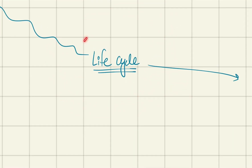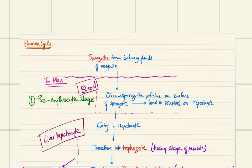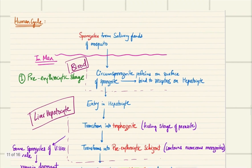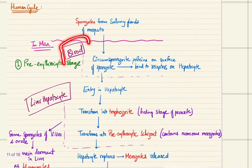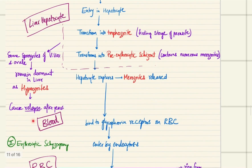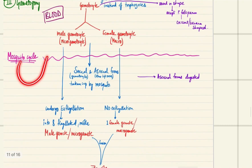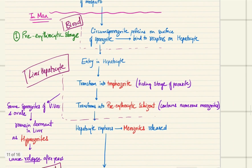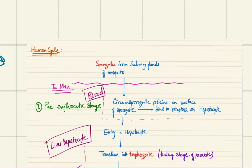Now let's get to the life cycle, which is also a major chunk of malaria and is usually asked in viva and theory exams. The life cycle of malaria is divided into two parts: in man and in the mosquito. A rough overview: the parasite travels from the blood to the liver, then back into the blood, infects the RBCs, ruptures the RBCs, and re-enters the blood where the mosquito sucks these parasites to complete the life cycle and then reinfect the man. The infective form which actually enters the man is the sporozoites.